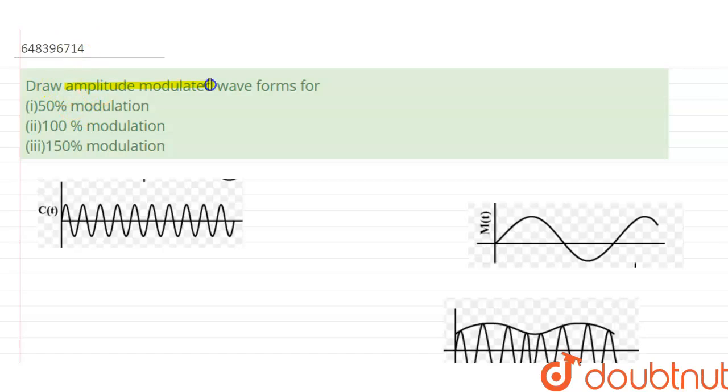The first option is 50% modulation. The second one is 100% modulation, and 150% modulation. So here the message wave is called as m(t), so m and t is message wave.